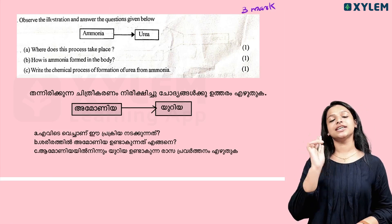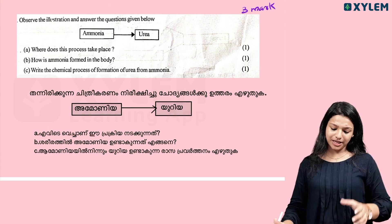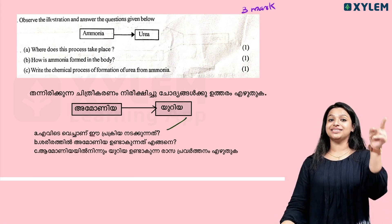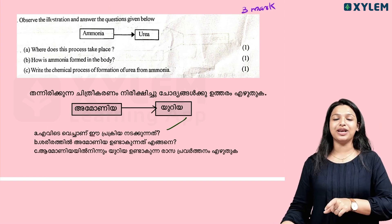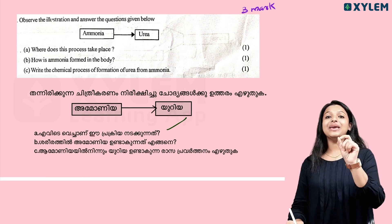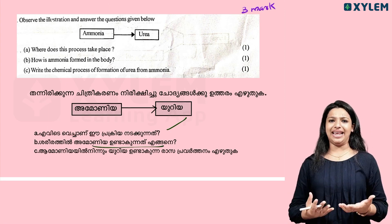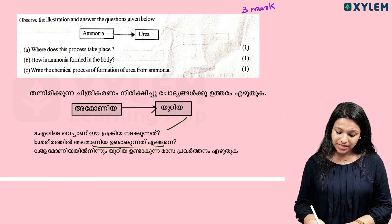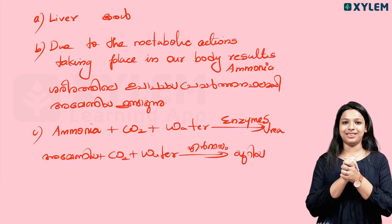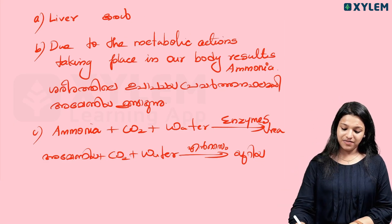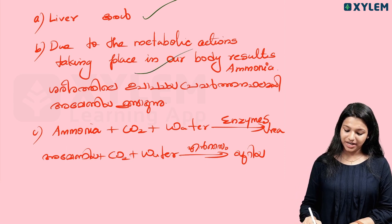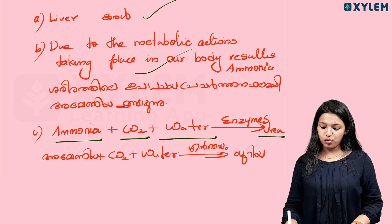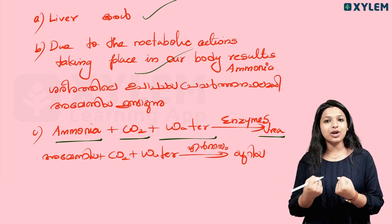Observe the illustration and answer the questions. In our body, metabolic actions produce ammonia. Ammonia is toxic, so the liver converts it. The chemical equation is: ammonia plus carbon dioxide plus water, with enzymes, produces urea. This is how urea is formed in the body.